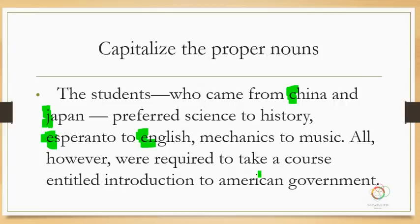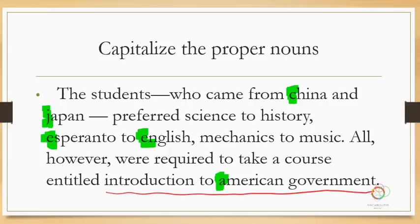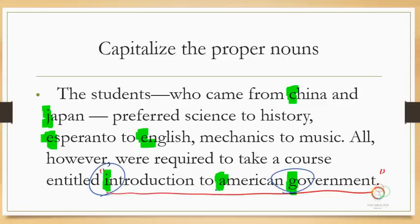All, however, were required to take a course entitled Introduction to American Government. What is a name here? Nothing seems like a name except for American, so we definitely capitalize American. But in this case, what we have is a title of a course — this is the name of the course — so you might put quotation marks around it or italicize the whole name. When you do that, this becomes the name of the course, and all big words need to be capitalized. We're not going to capitalize 'to' because that's a small word. The general rule for capitalization is that you capitalize the first word and the last word, and any big words in between. Ignore small words like prepositions and articles.